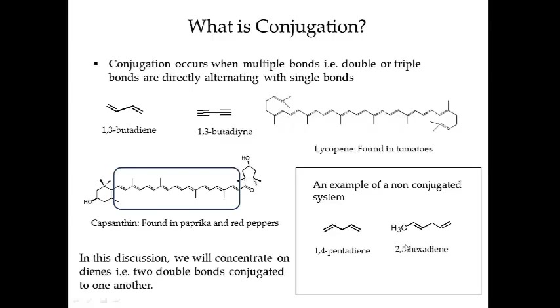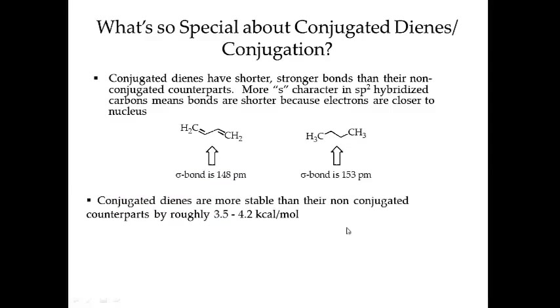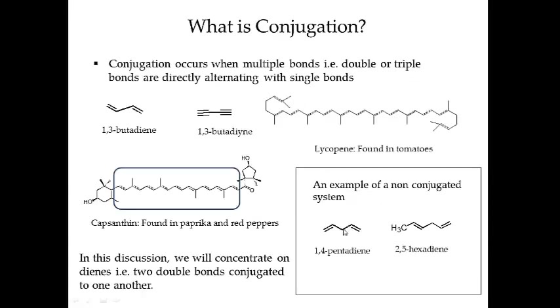These are examples of systems that are not conjugated. As you can see, this is a double bond, and the next double bond closest to it is separated by two single bonds: double, single, single, double. So let's move on.